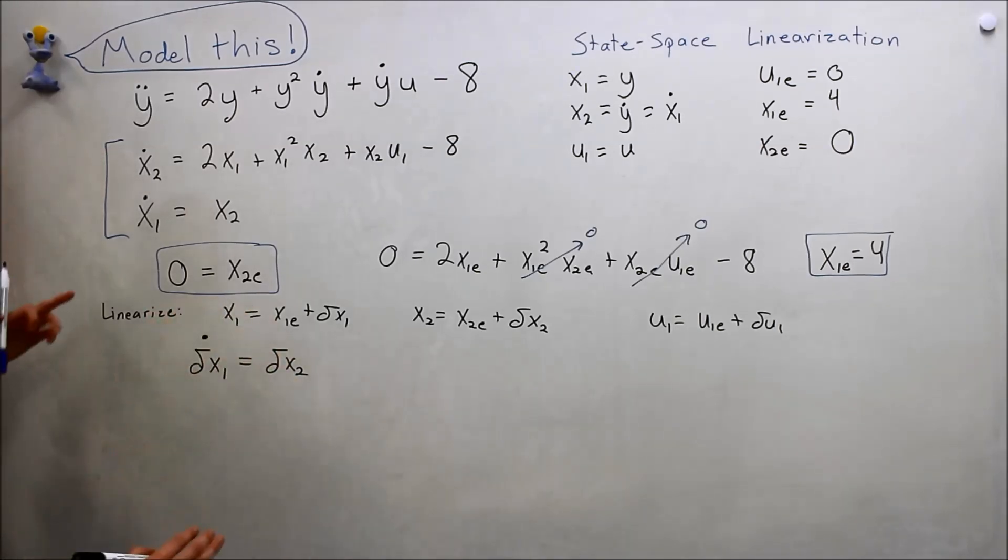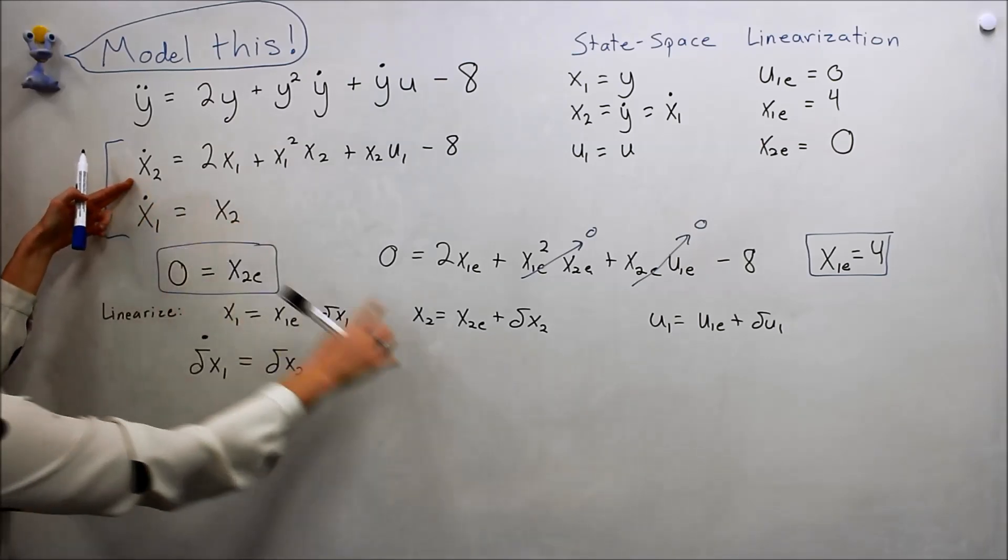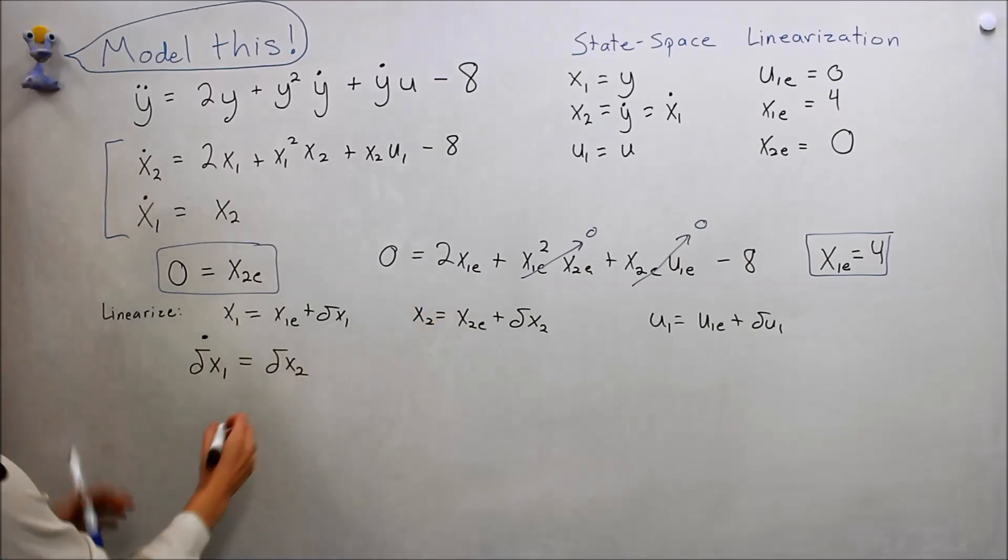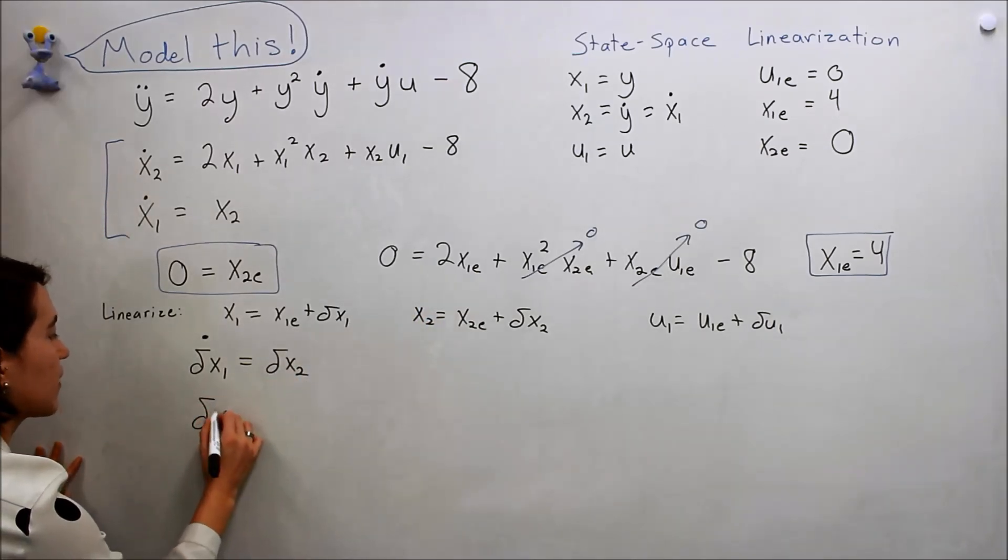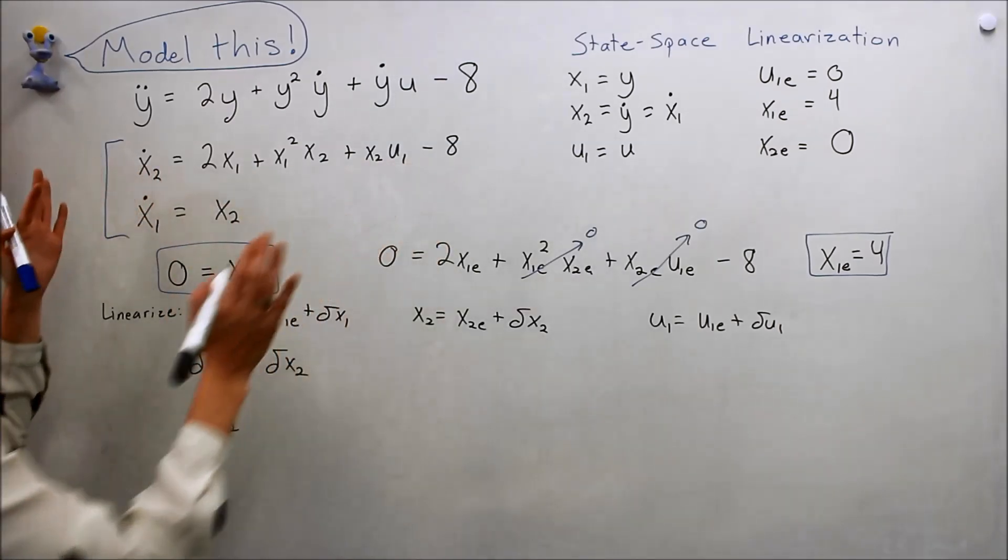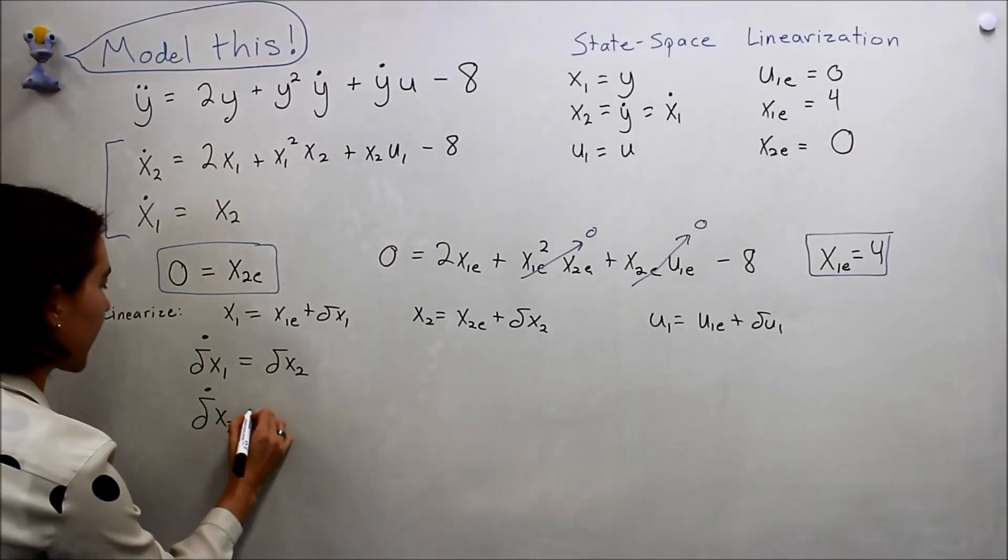What about this one? Let's just break it down. Start with the left side. If we take the derivative of x2, which is this value, this again is zero, so we're just left with delta x2 derivative. So now let's go to the right side. This is where we get a little bit more complicated.